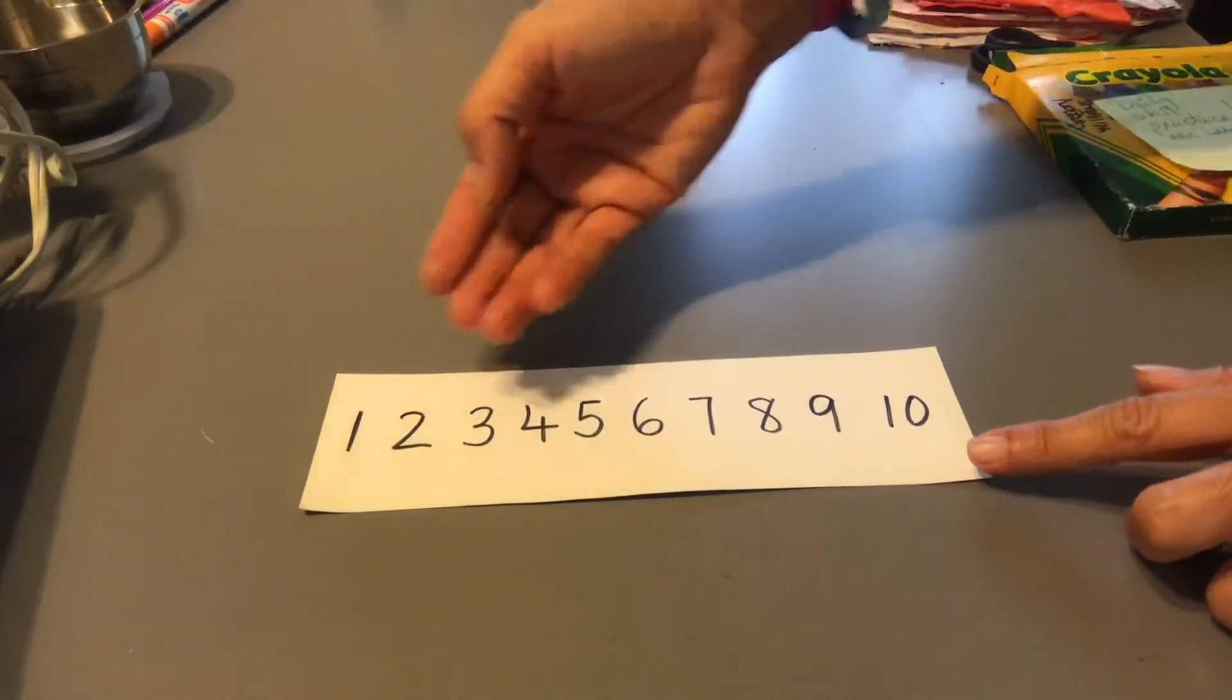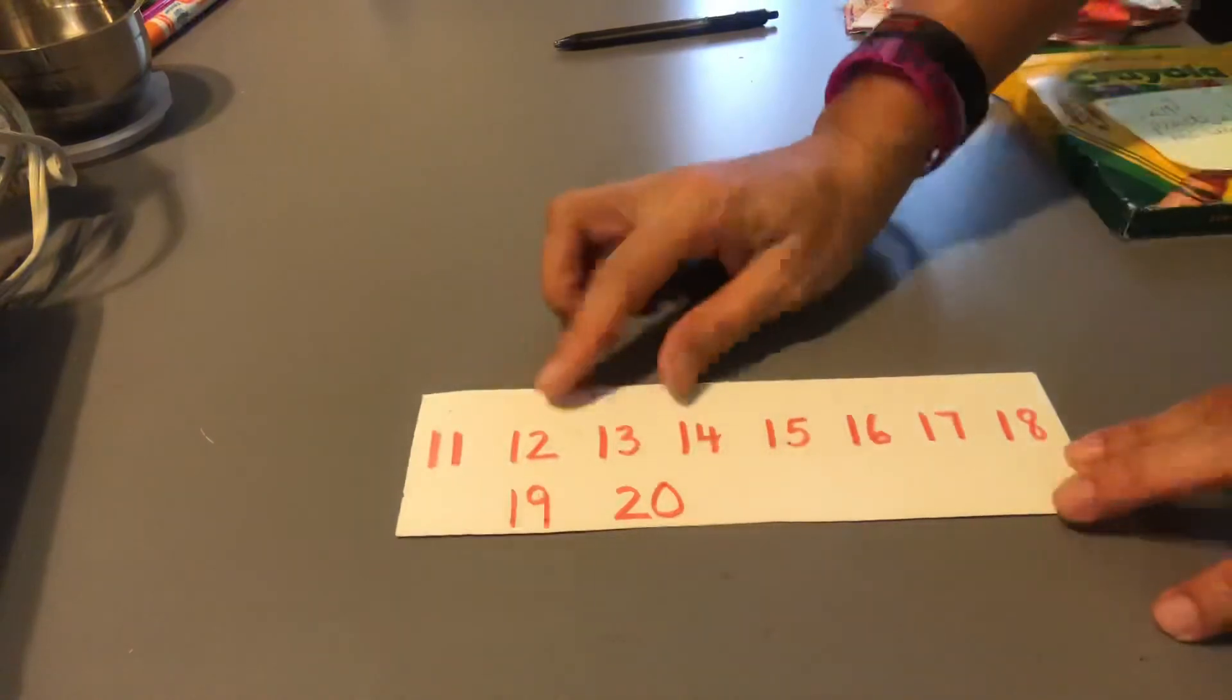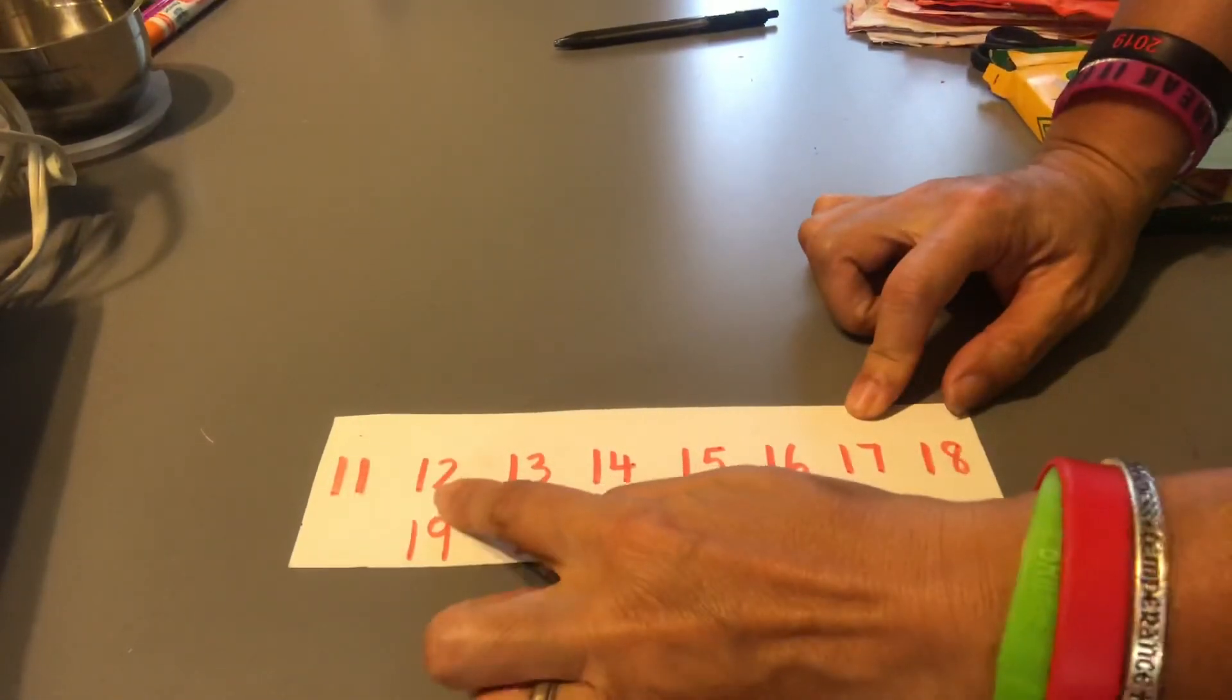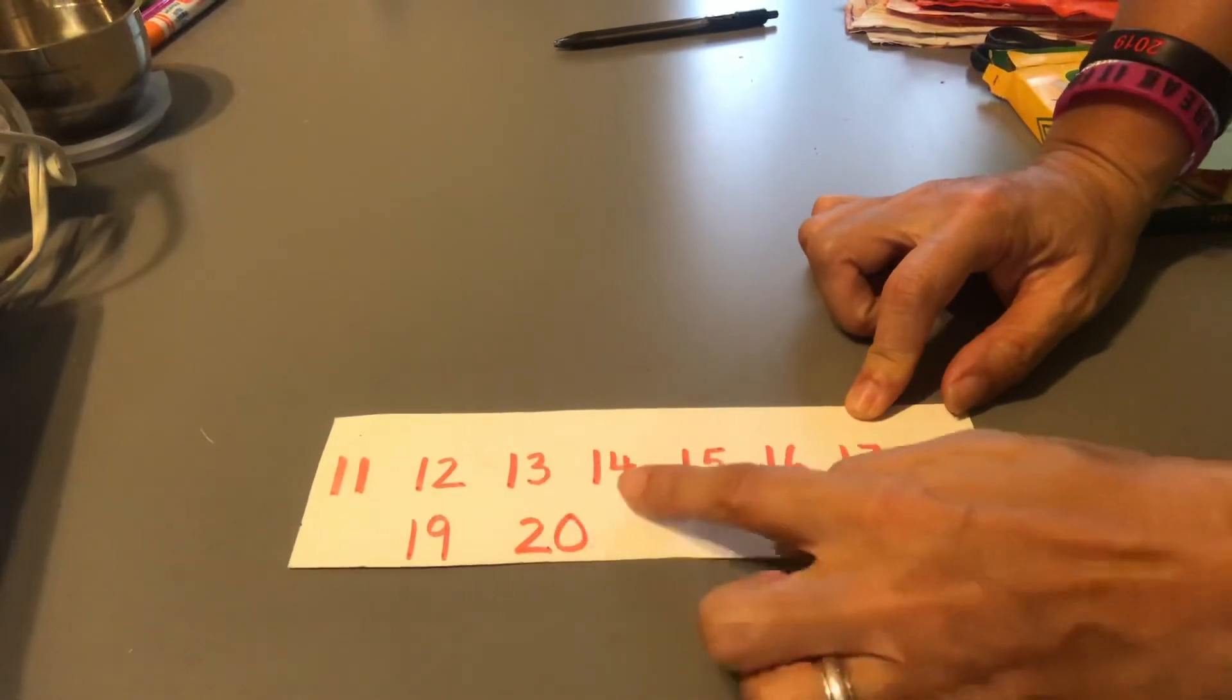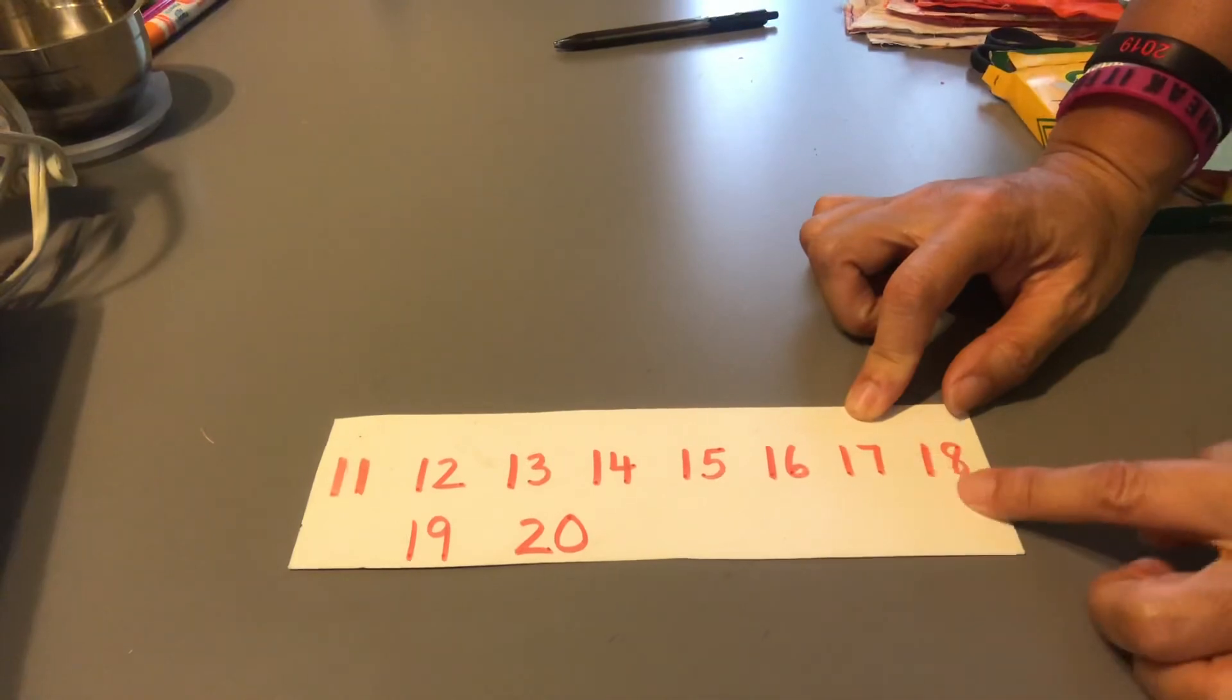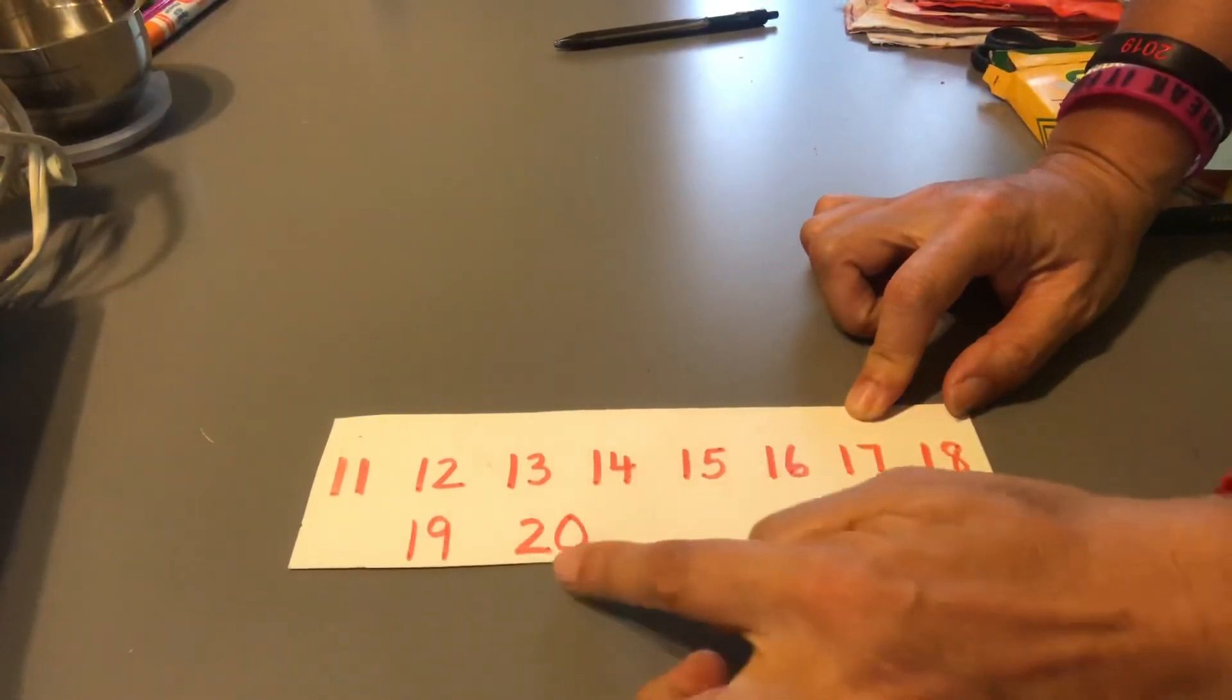If your child already knows how to recognize 1 to 10, you can always move to higher numbers. So: 11, 12, 13, 14, 15, 16, 17, 18, 19, 20.